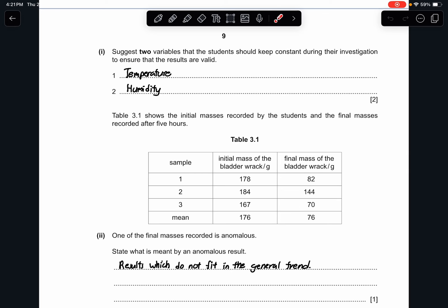Table 3.1 shows the initial masses recorded by the students and their final masses recorded after five hours. Part 2: one of the final masses recorded is anomalous. State what is meant by an anomalous result. It's technically results which do not fit or suit to the general trend. You can see 82, 104, 70 and 76 which doesn't make sense at all. So this doesn't fit the general pattern of results.